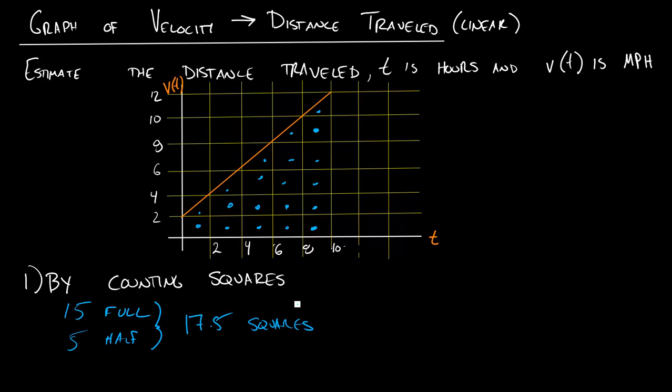Now, does this mean I traveled 17.5 miles? It does not in this case. Each one of these squares represents a total distance traveled. Let's think about what one of these squares is, like this square in particular. This square, if I was traveling at 2 miles per hour, that's what the height of this square is.